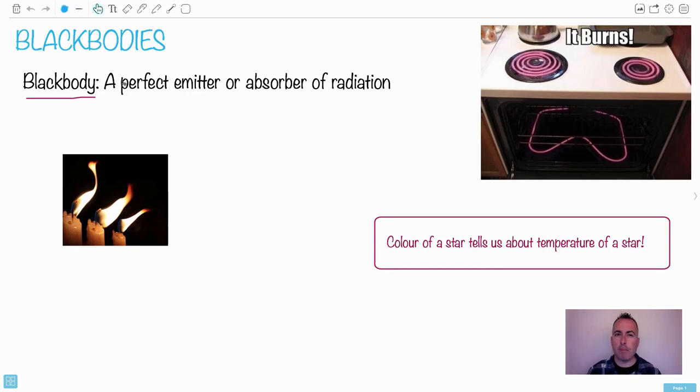We're learning about blackbodies and how they are perfect emitters or absorbers of radiation. We actually say that the sun itself, or stars themselves, are going to be blackbodies. So we're going to say that a star is a complete or perfect absorber or emitter of radiation. We can use our understanding about blackbodies to get an idea about what happens with stars.